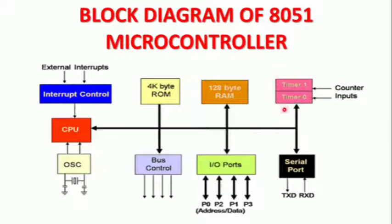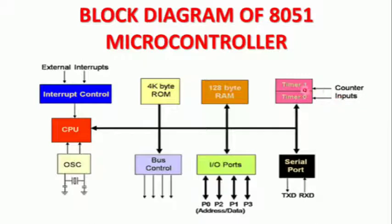A timer is a counter that we need to work on. We need to make a counting mechanism. Most industries have a lot of products — for example, a soap industry has a counting system. So now we can give a countdown. If you add the counts, we can choose the count and send the output. This will then work as a counter and timer.